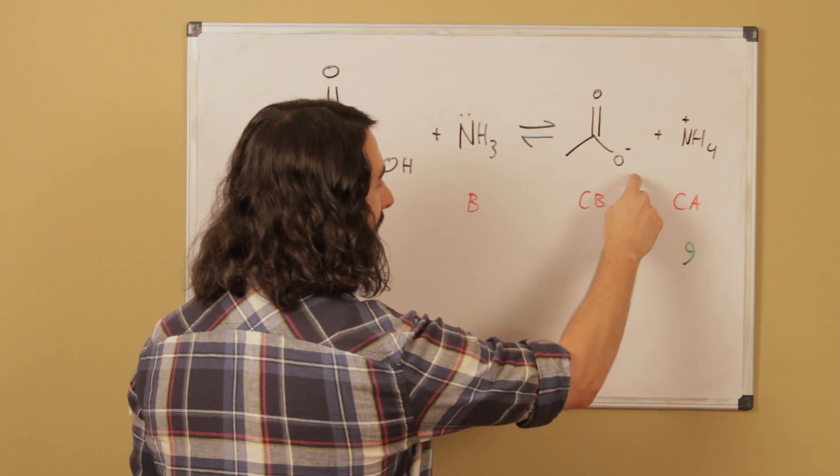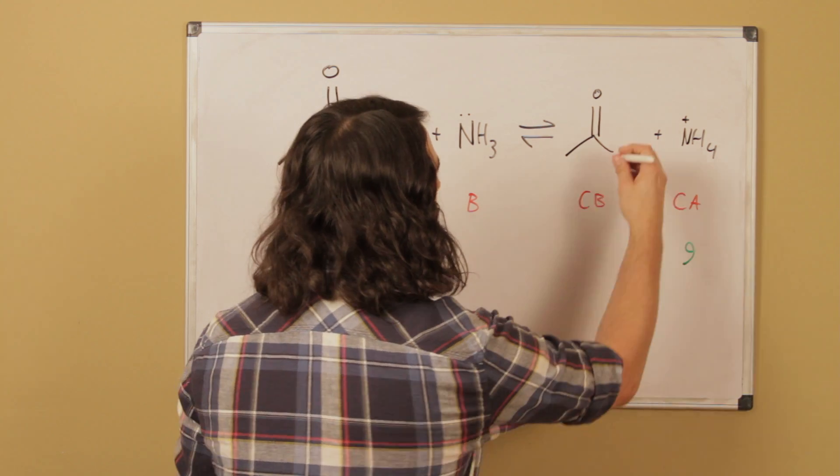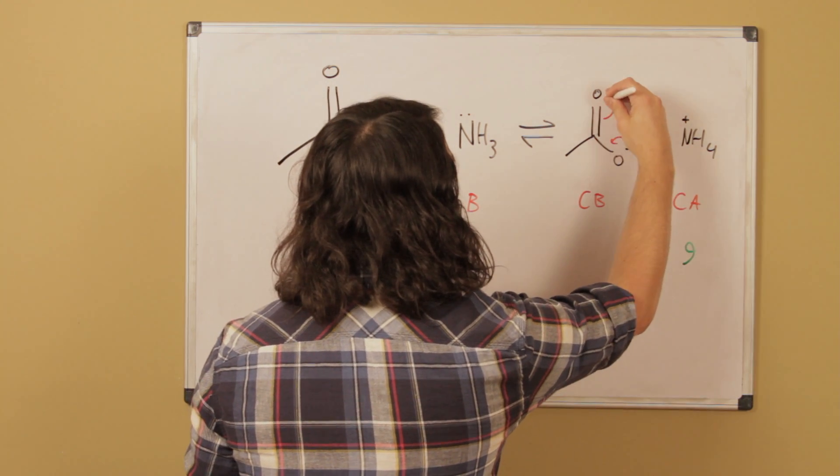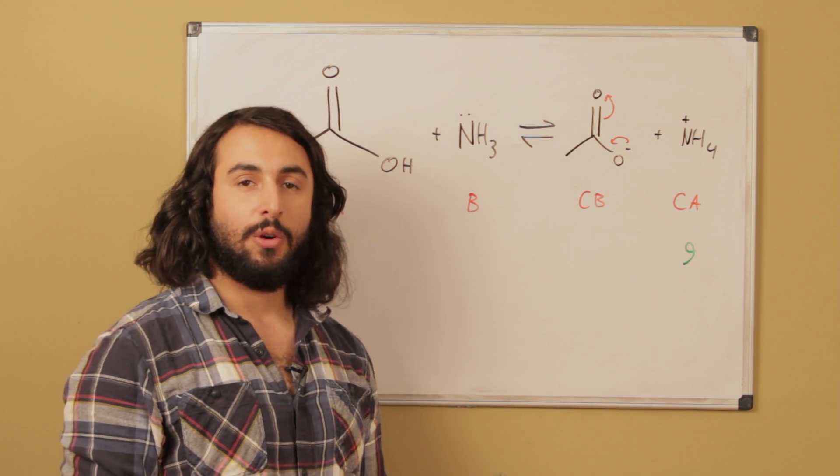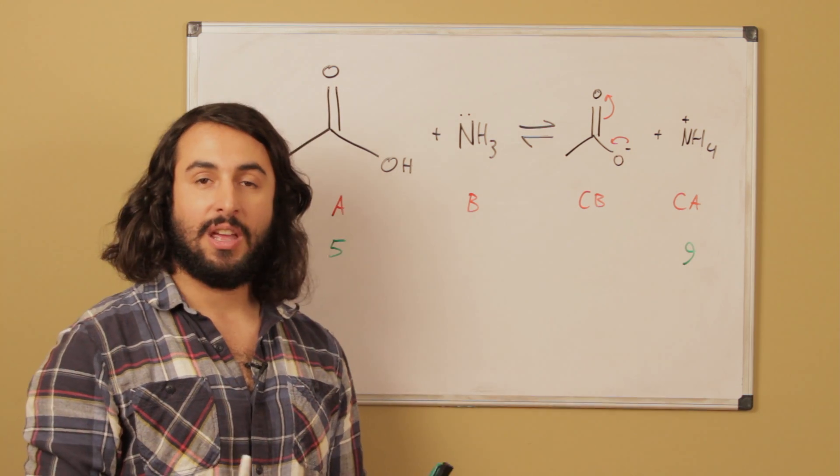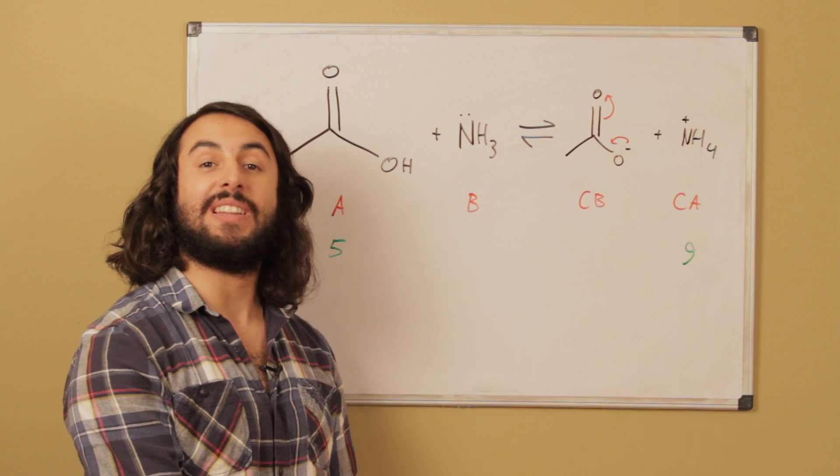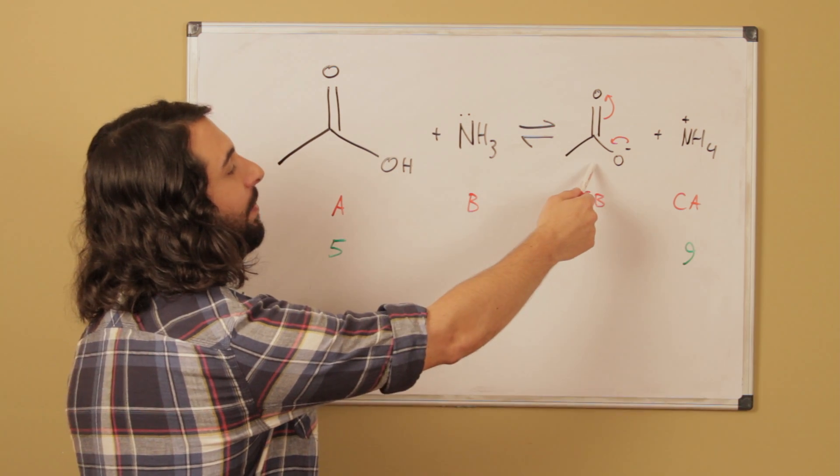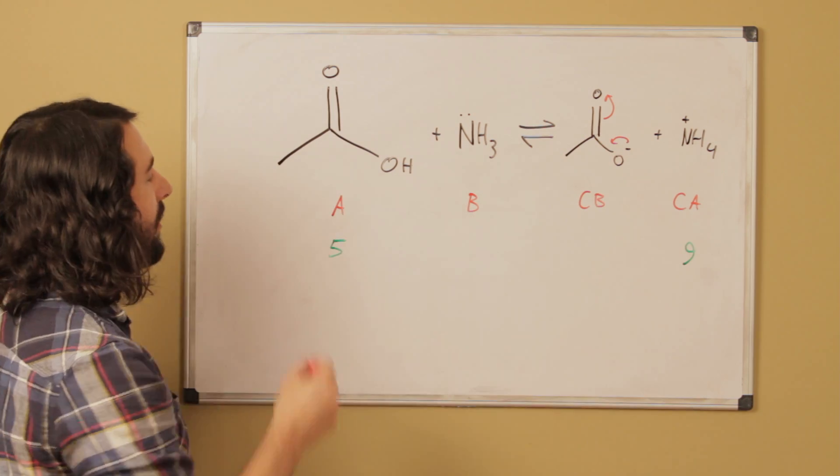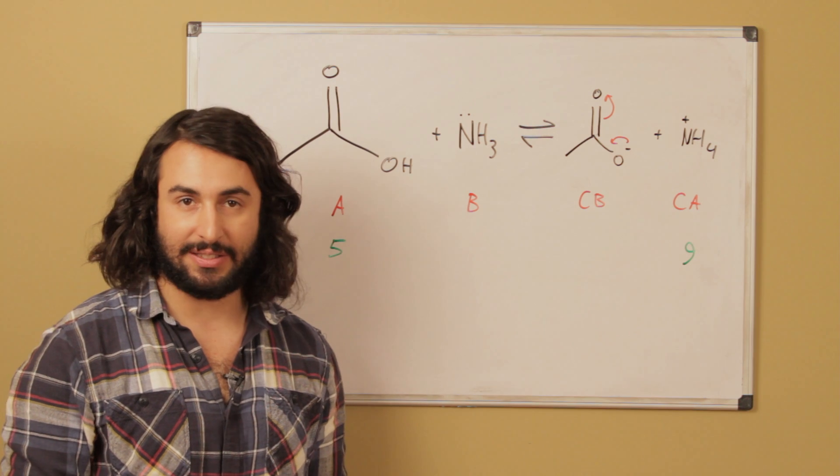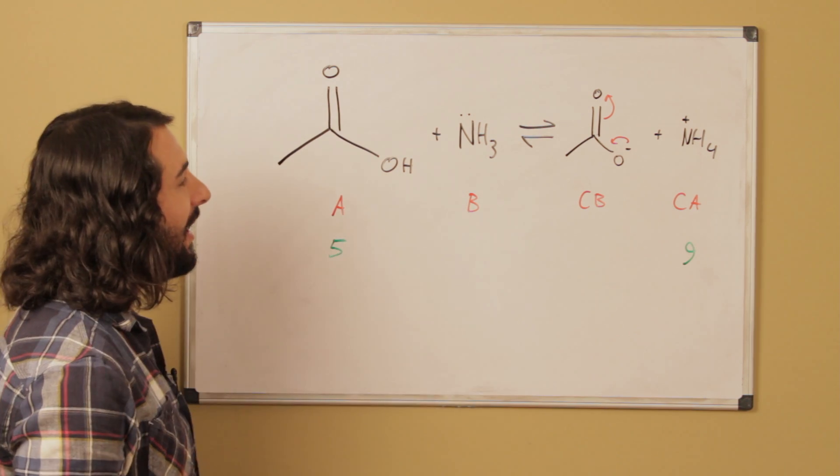What results here is the carboxyl anion that we talked about, and that is resonance stabilized. Because of the resonance stabilization, remember that acid strength corresponds to the stability of the conjugate base. Because this conjugate base is quite stable due to the resonance stabilization, that means the carboxylic acid is relatively acidic with a pKa around 5.